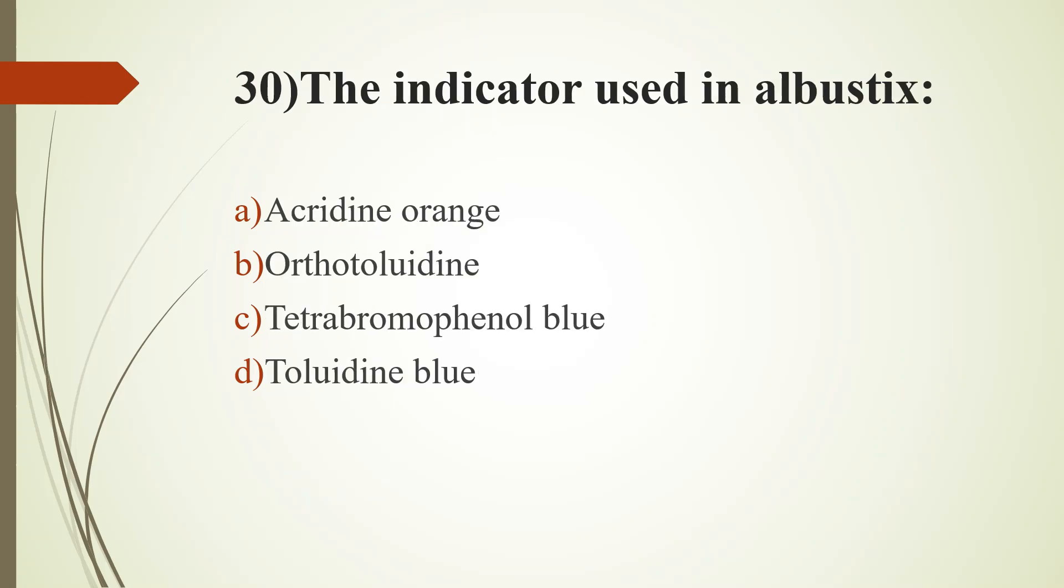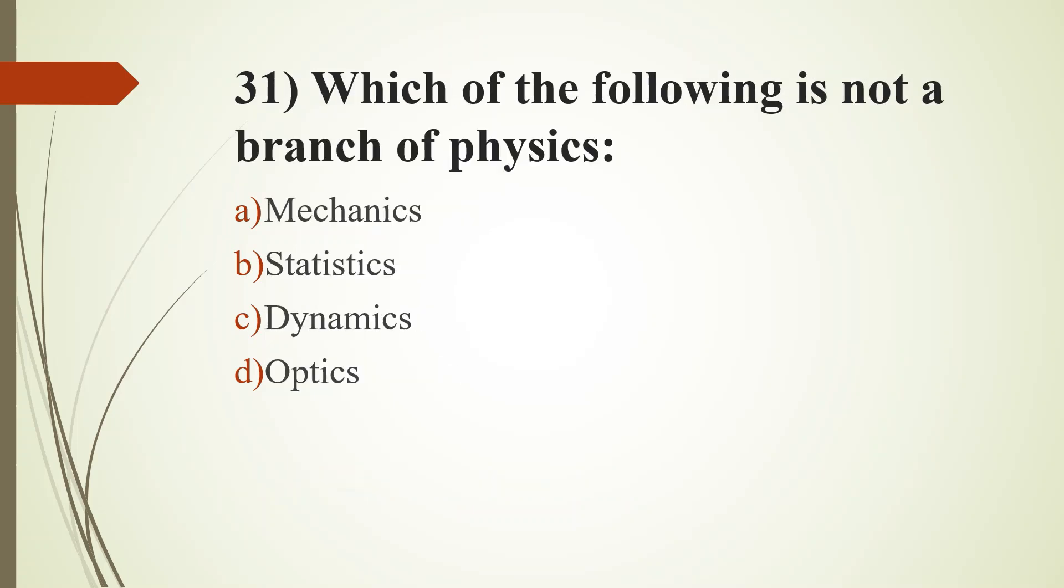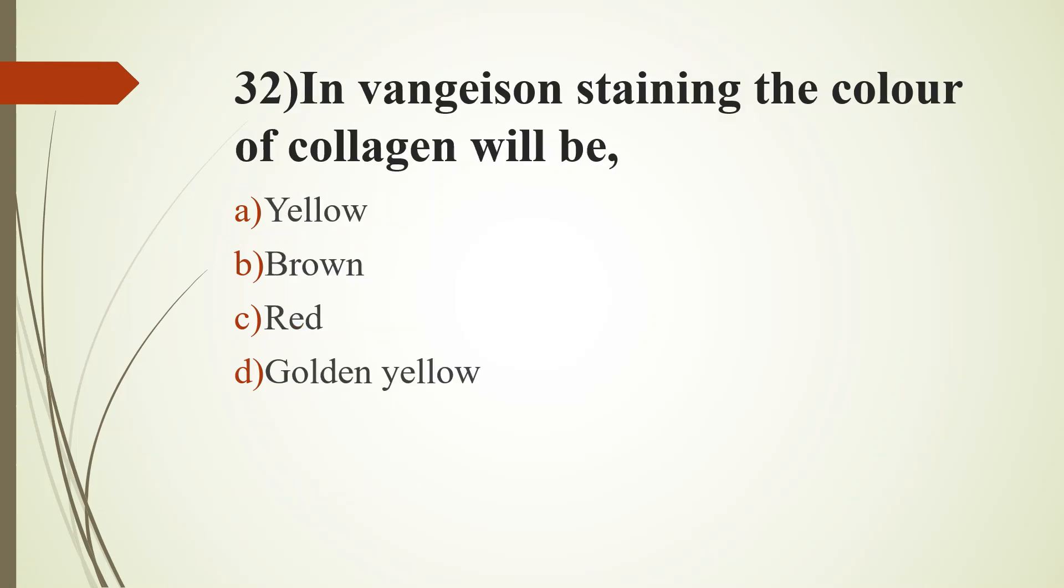30th question. The indicator used in albastix: option A, acridine orange; option B, orthotoluidine; option C, tetrabromophenol blue; option D, all of the above. Answer is option C, tetrabromophenol blue. 31st question. Which of the following is not a branch of physics: option A, mechanics; option B, statistics; option C, dynamics; option D, optics. Answer is option B, statistics. 32nd question. In Van Gieson staining, the color of collagen will be: option A, yellow; option B, brown; option C, red; option D, golden yellow. Answer is option C, red.